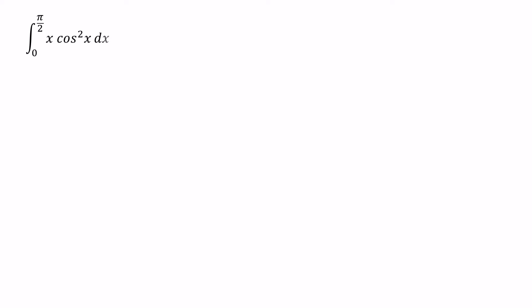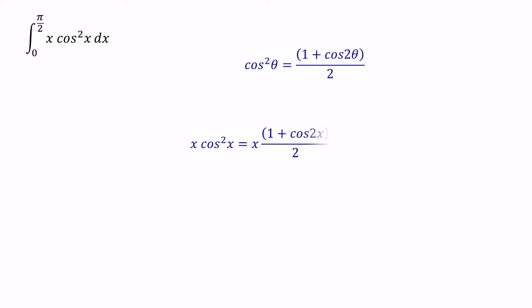Before we start, let's consider how we can solve this question. We can convert cos squared x to its linear form using the equation cos squared theta equals 1 plus cos 2 theta over 2. After that, we can remove the brackets and get the result: half times within bracket x plus x cos 2x. Since x equals x to the power of 1, we can integrate x as x squared over 2. To simplify x cos 2x, we can use the integration by parts method.